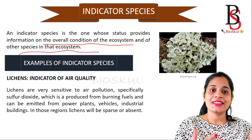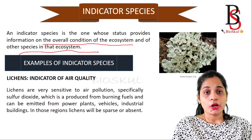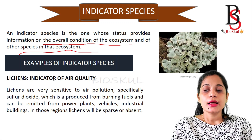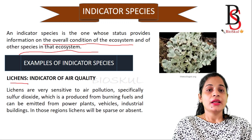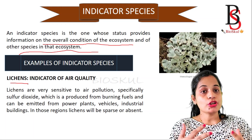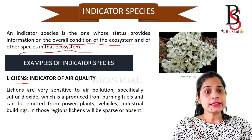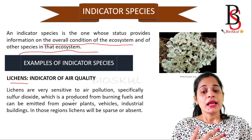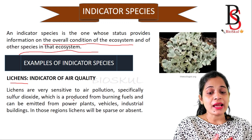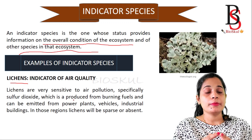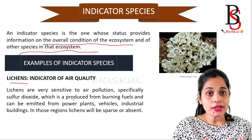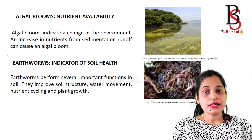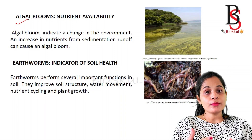As its name indicates, indicator species are those whose presence or structure provides information on the overall condition of the ecosystem and of other species present in that ecosystem. The first example is lichen — lichen is an indicator of air quality. Lichen is very sensitive to air pollution, so when there is air pollution in a region, the population of lichen will be sparse or totally absent.